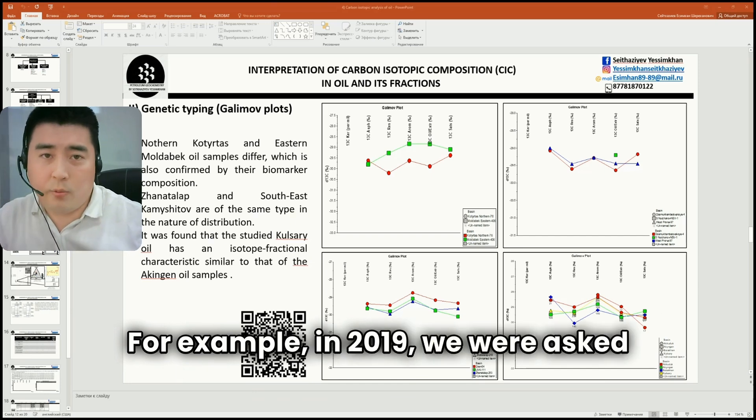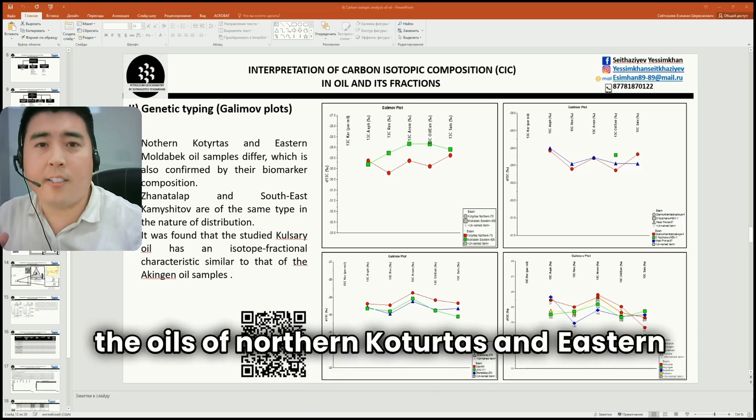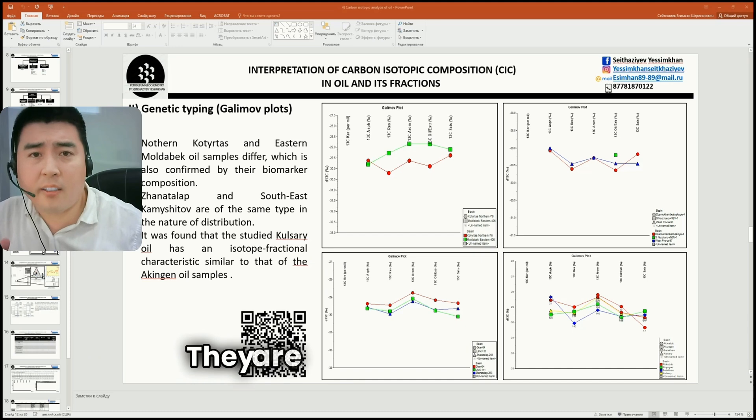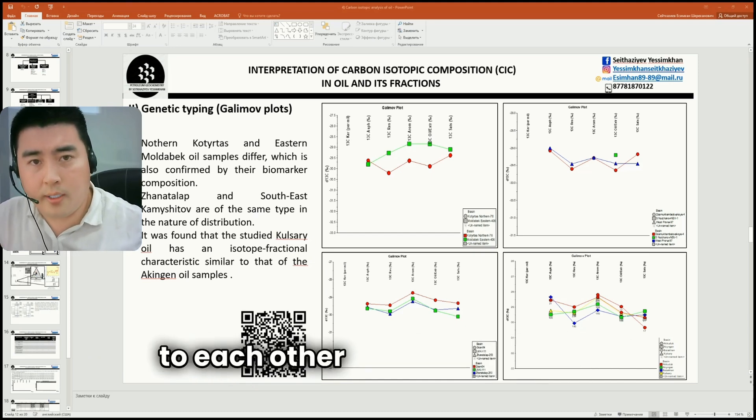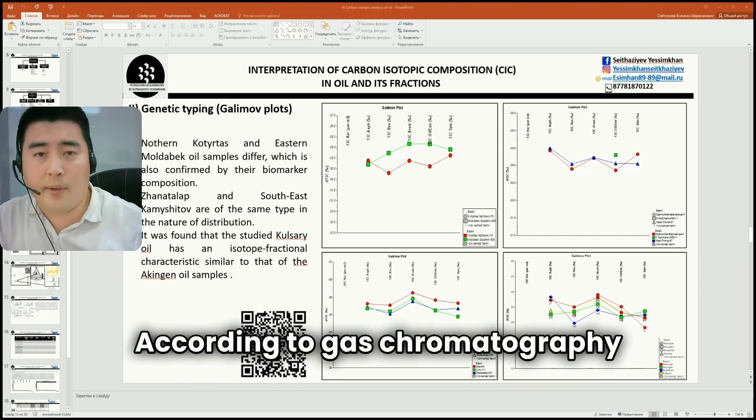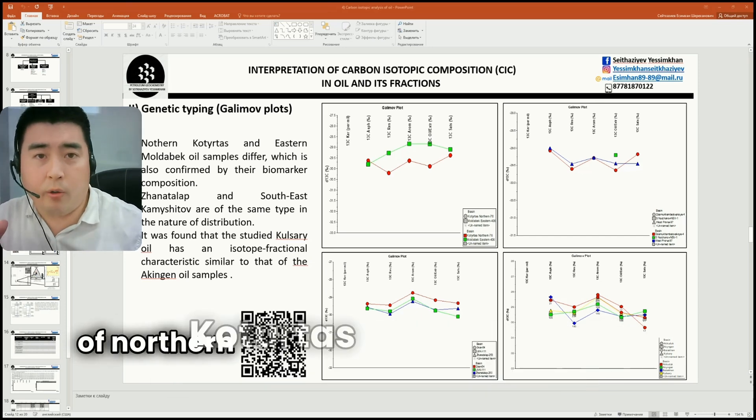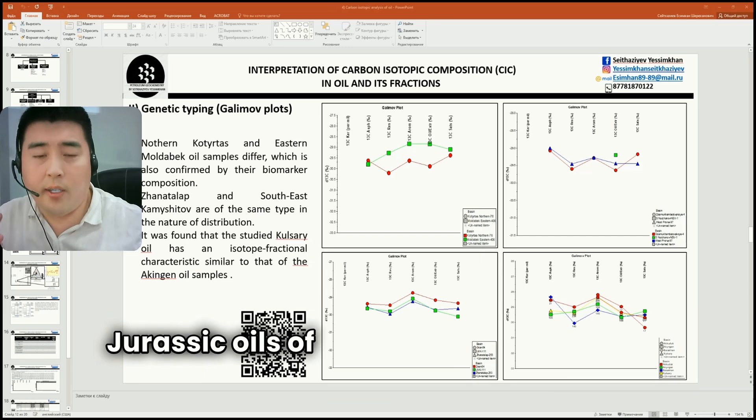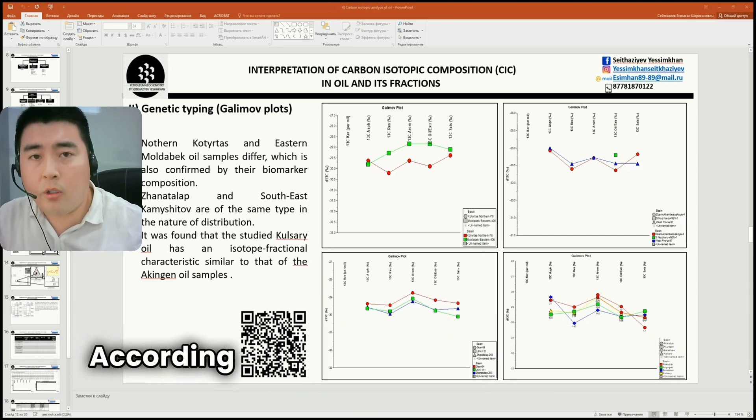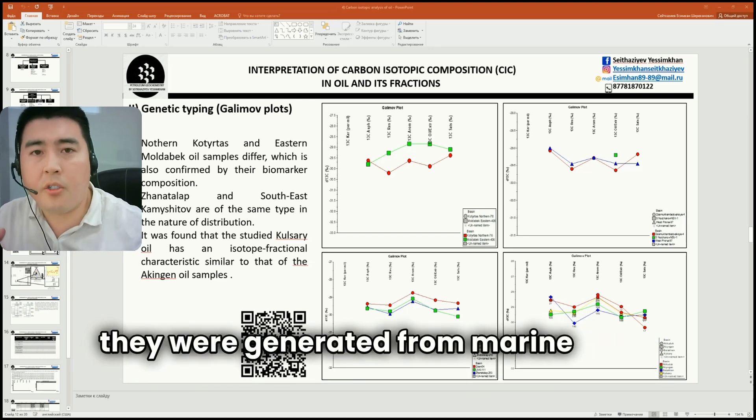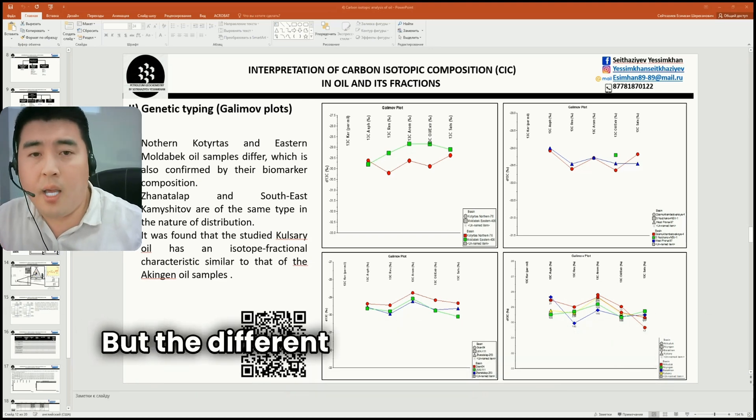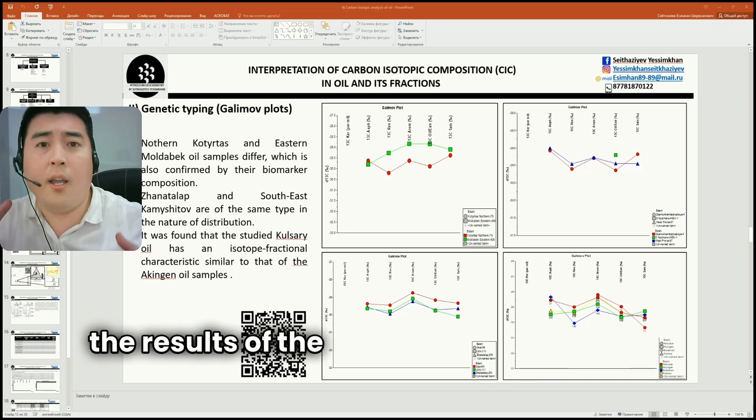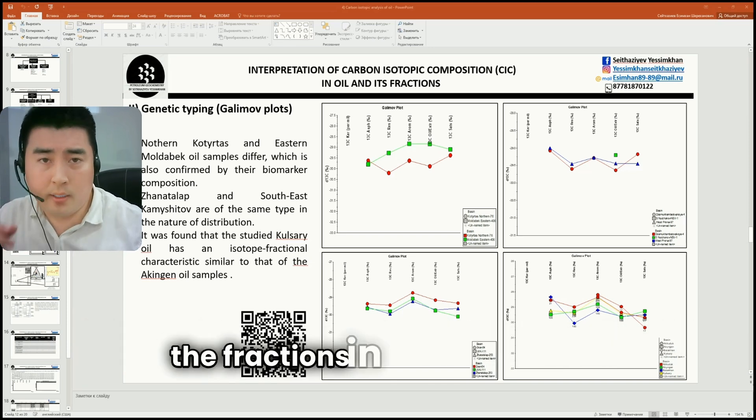For example, in 2019, we were asked whether the oils of northern Qatartas and eastern Moldebas are genetically related or not. They are located very close to each other in the Kara Bay region. According to gas chromatography analysis, the Triassic oils of northern Qatartas were not biodegraded, while the Jurassic oils of eastern Moldebas were biodegraded. According to the biomarker composition, they were generated from marine, shaly source rock, but their different biomarkers allow us to assume their genetic difference, which is also confirmed by the results of the carbon isotope analysis of their fractions in the Galimov plot.